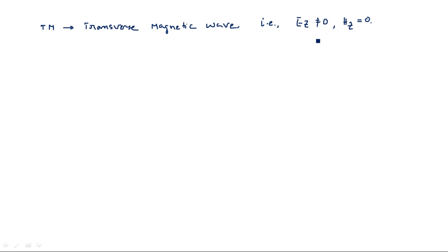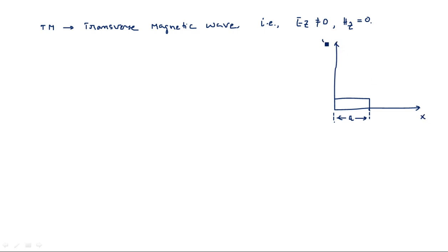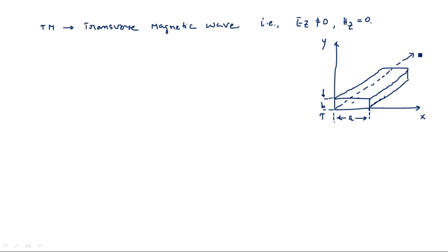We already considered a rectangular waveguide in which the breadth is along the X direction and the width is along the Y direction. The rectangular waveguide is placed in the direction of propagation, which is Z.